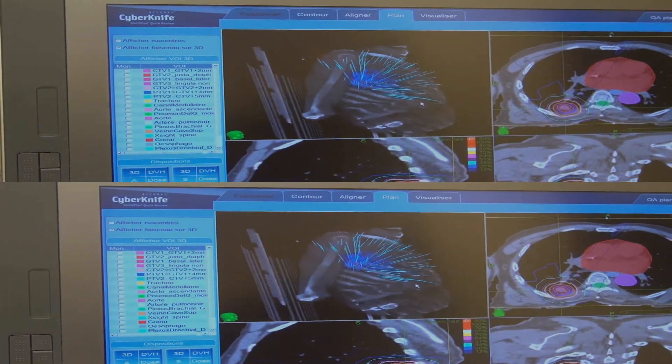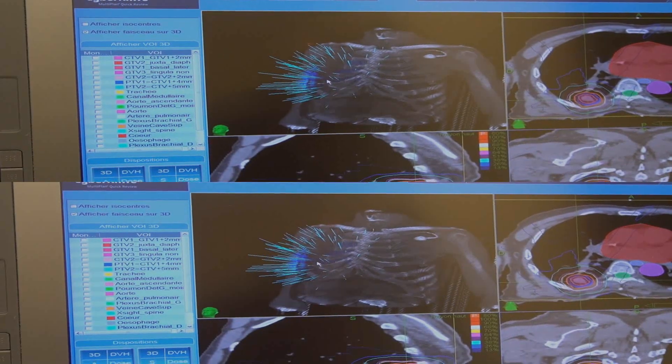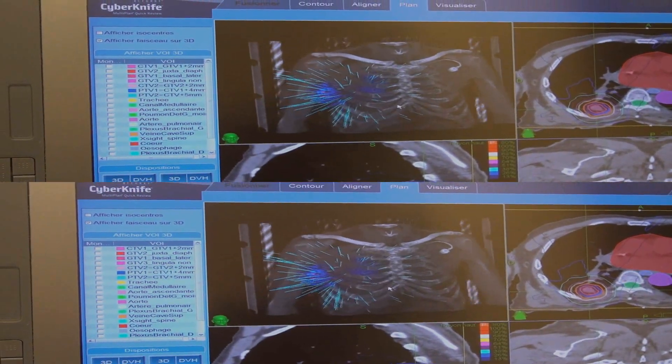We can see that each blue line corresponds to one of the treatment beams, with the treatment being the sum of all these individual elements.